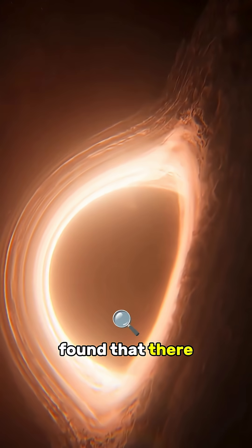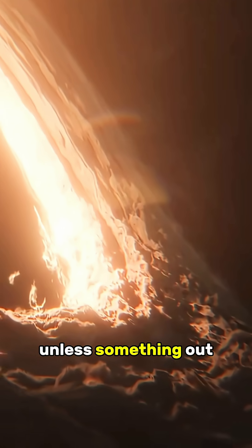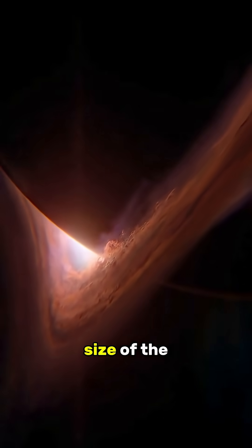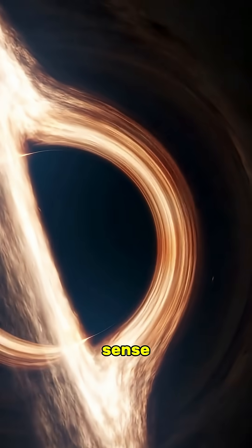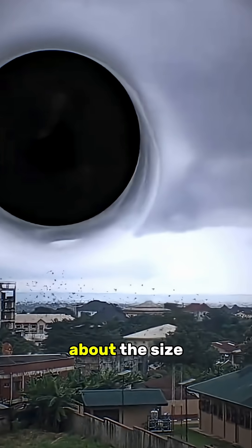A theory called Planet 9 found that there are some objects in our solar system whose orbits don't really make sense, unless something out there is pulling on them. It was originally thought to be a planet around 5 to 10 times the size of the Earth. And this theory makes the most sense. But some astronomers still speculate it could be a primordial black hole about the size of an apple.